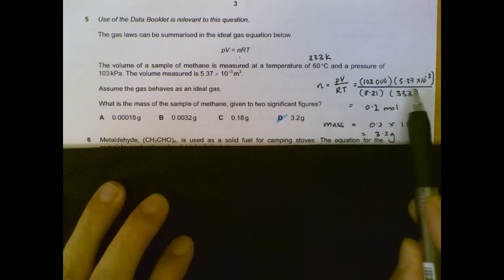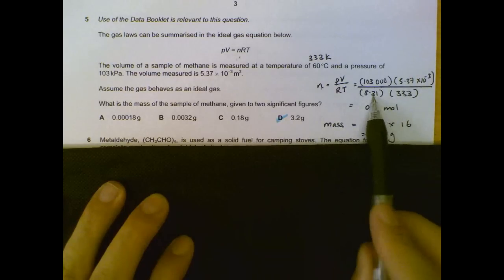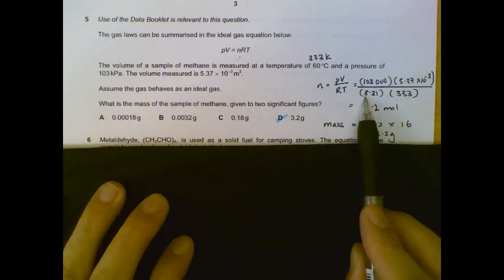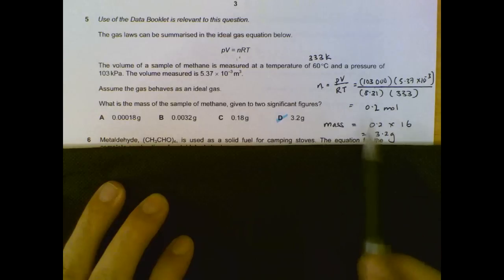We substitute the numbers in. Your gas constant being 8.31. We find out that we have 0.2 moles of methane. Once we have this number of moles, we multiply by the MR, 16. That will give us 3.2 grams.